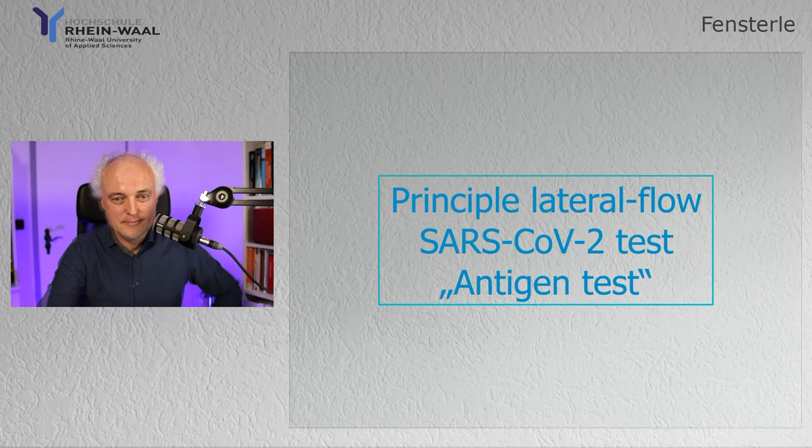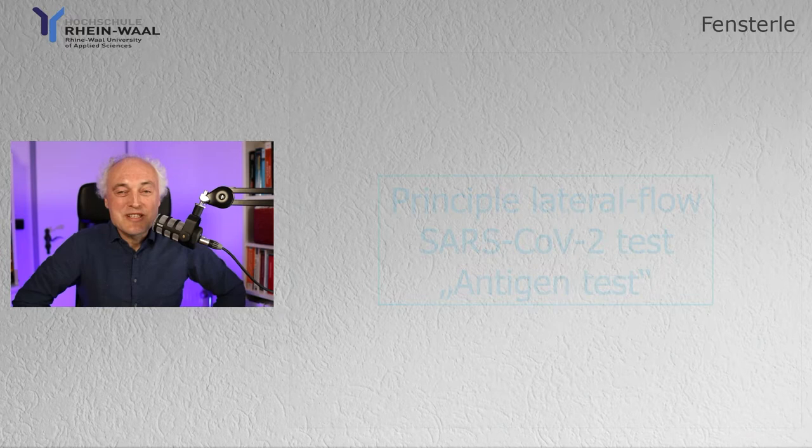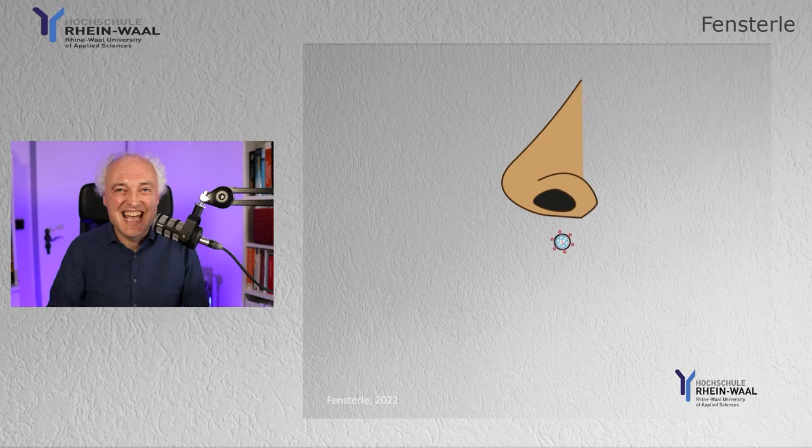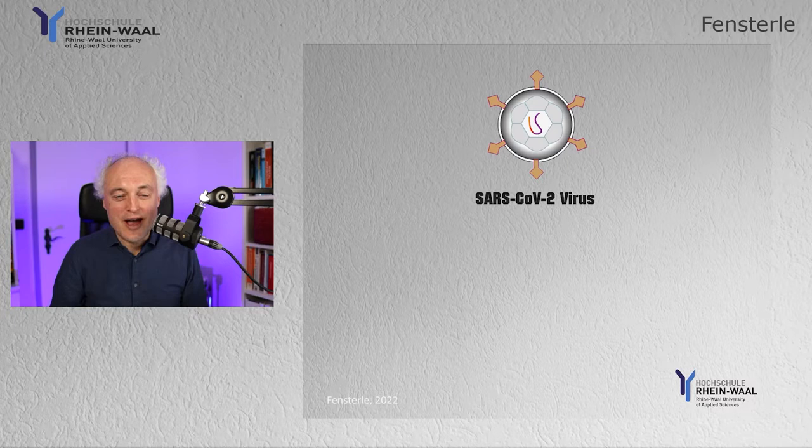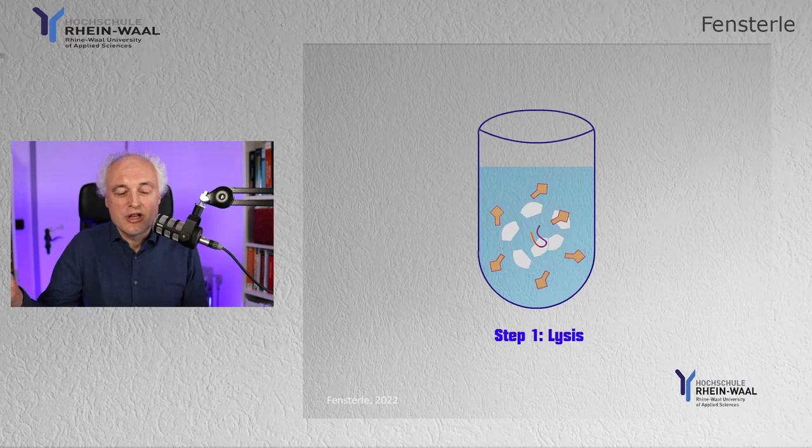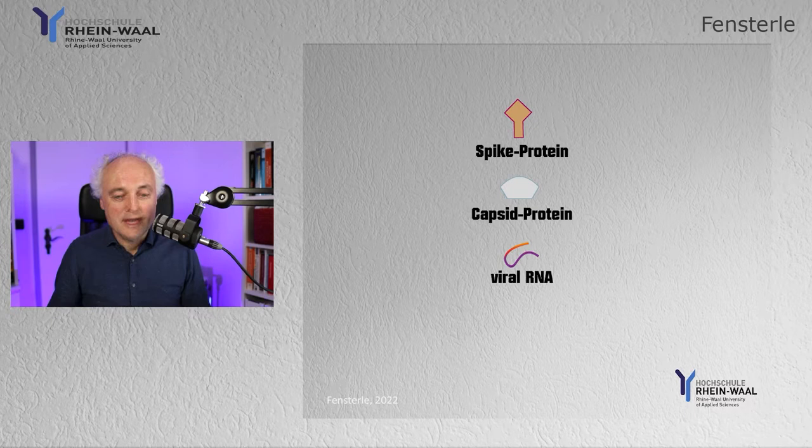Let's have a look at how a lateral flow SARS-CoV test works. First of all, we need the virus, which comes from the nose — we extract the virus from the nose. So here we have the virus; it's an envelope virus. In the first step, the virus is lysed. This lysis buffer disrupts the envelope, and then we have the components of the coronavirus.